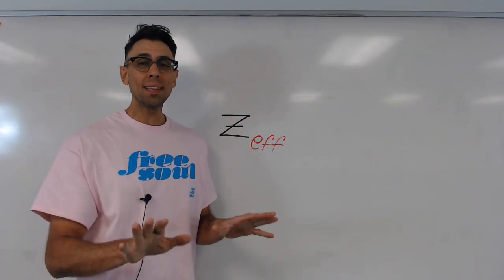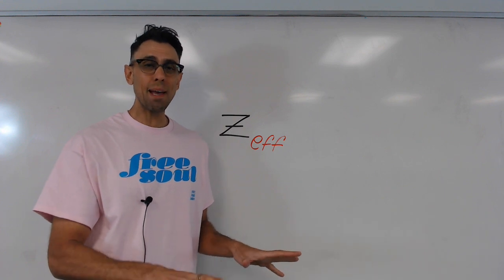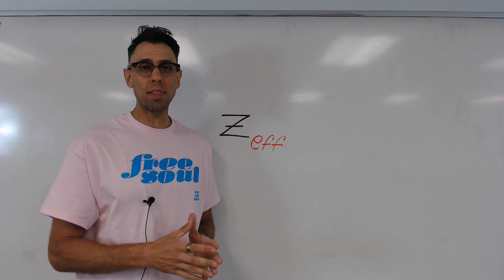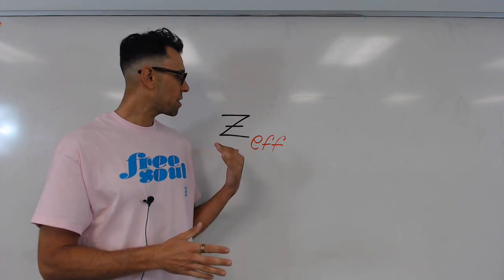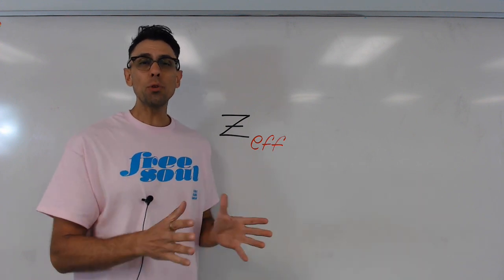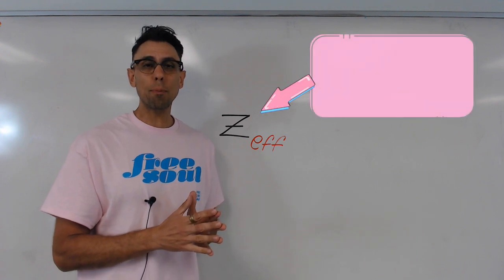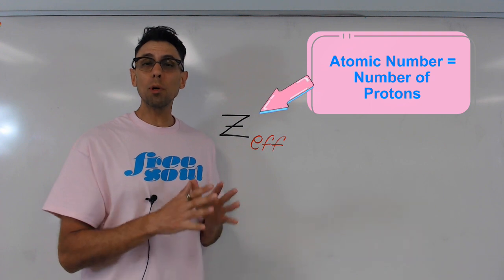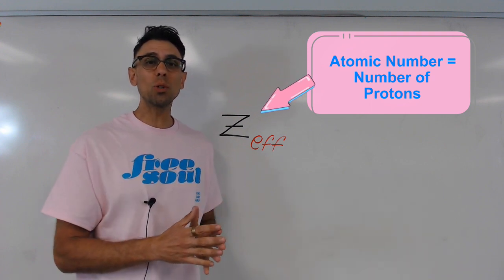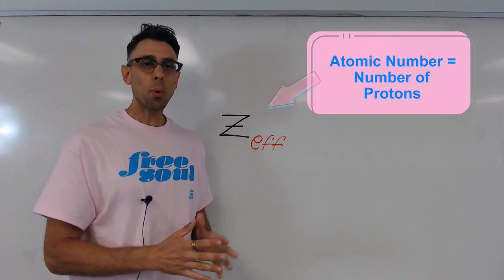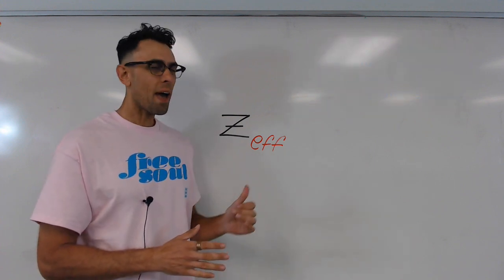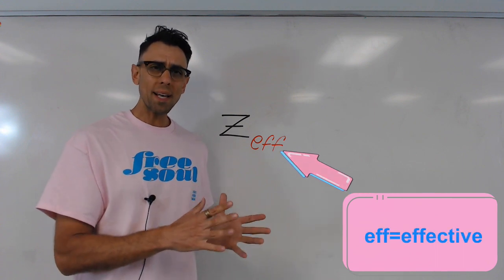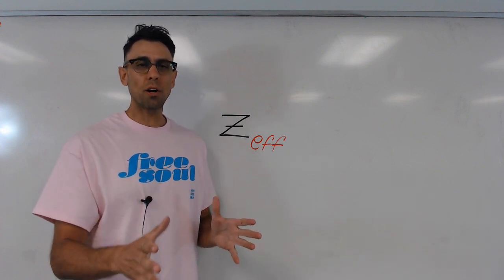Before we go any further, let's take a moment to explain the name effective nuclear charge and this curious symbol that we use to represent the concept. When it comes to the symbol, this Z is often used in chemistry context to represent the atomic number, which you know is the number of protons found in the nucleus of an atom. So we have the atomic number, and then the EFF is an abbreviation for effective.